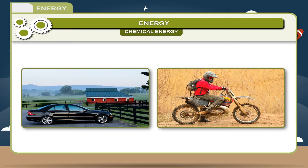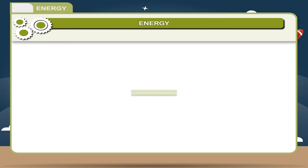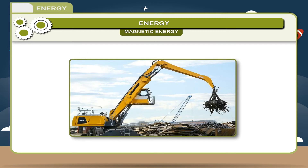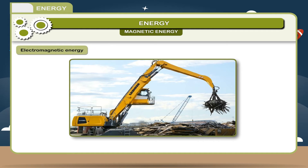Magnetic energy. When a magnet attracts a magnetic substance like iron, the energy used in this process is called magnetic energy. It is due to this energy that magnets can attract all magnetic substances. Iron scraps are separated from waste material using electromagnetic energy.